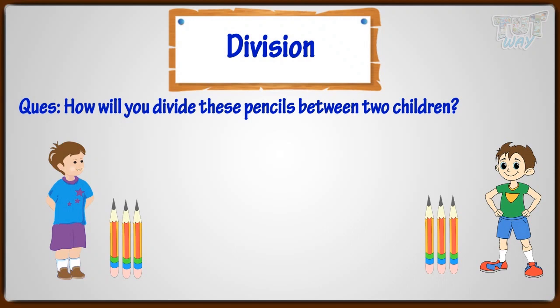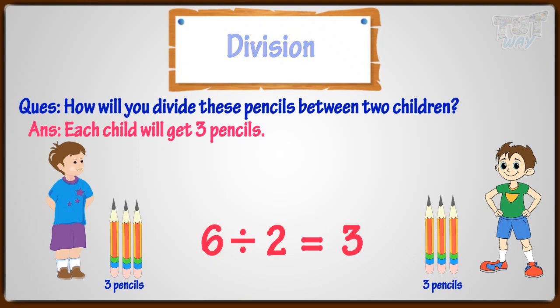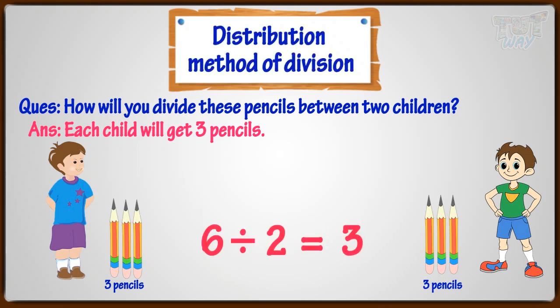So each kid will get three pencils. That is, six divided by two equals three. This method of division is called distribution.